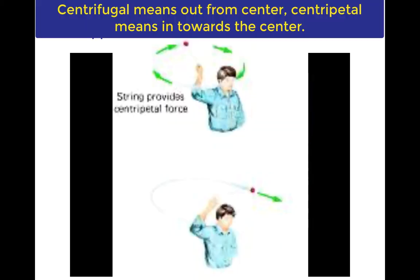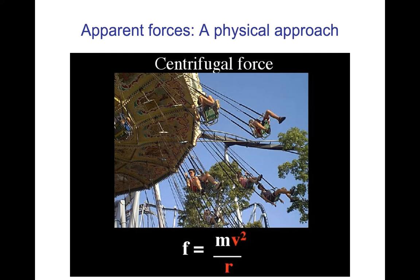The centrifugal force is pretty intuitive to many people and it's often illustrated by having a ball on a string, or some mass on a string, that you're rotating around over your head. If you were to let the end of the string go, then the ball would continue on in a straight line once it is not constrained by that force pulling it towards your hand as you spin it.